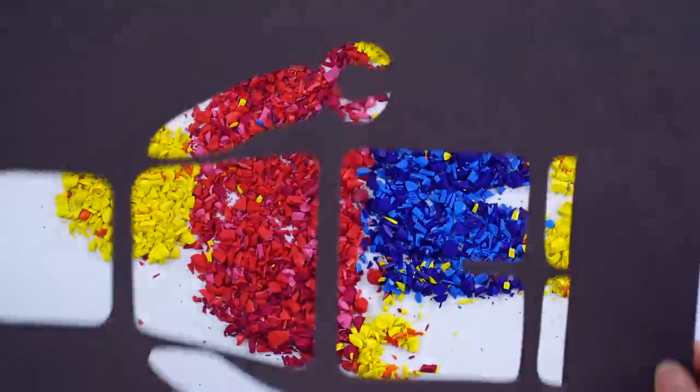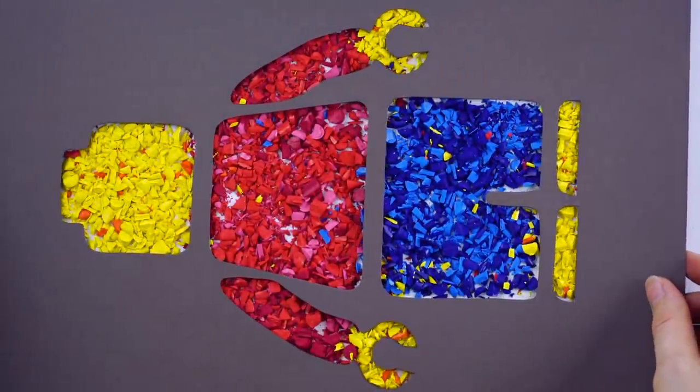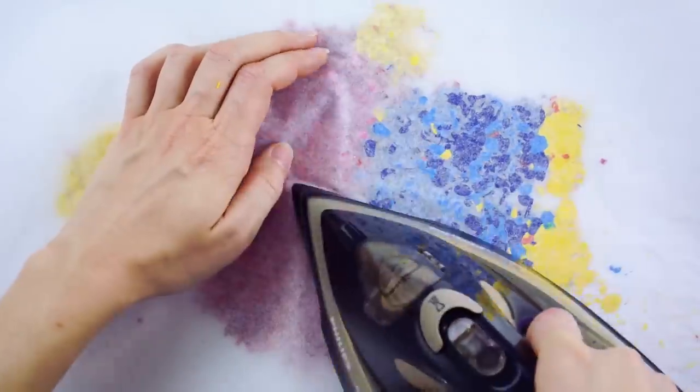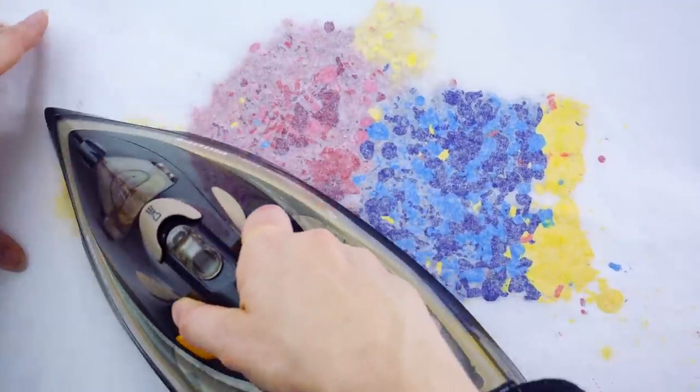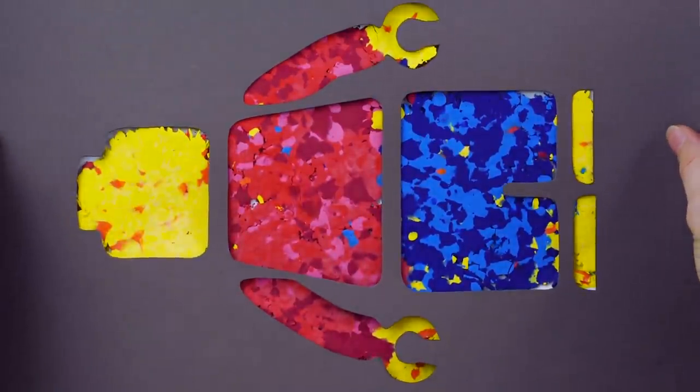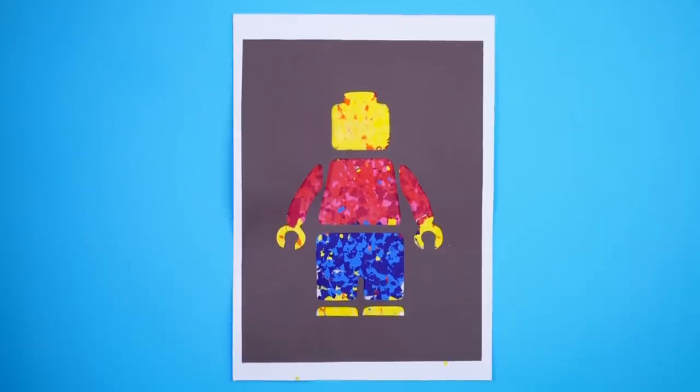Use the stencil to make the Lego design with the crayon pieces. Remove the stencil and put a piece of parchment paper over the design. Iron the paper to melt the crayon underneath. Place the stencil on top and enjoy your new Lego crayon art piece.